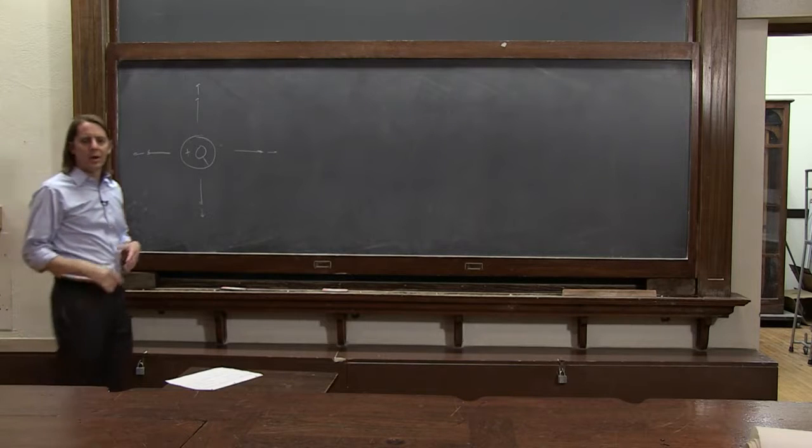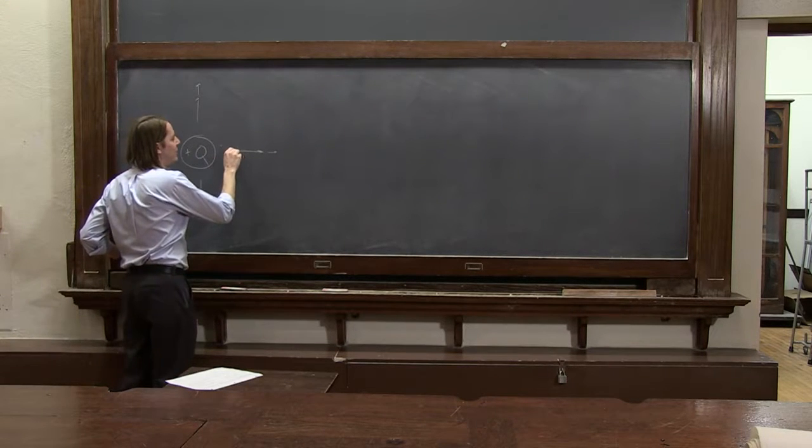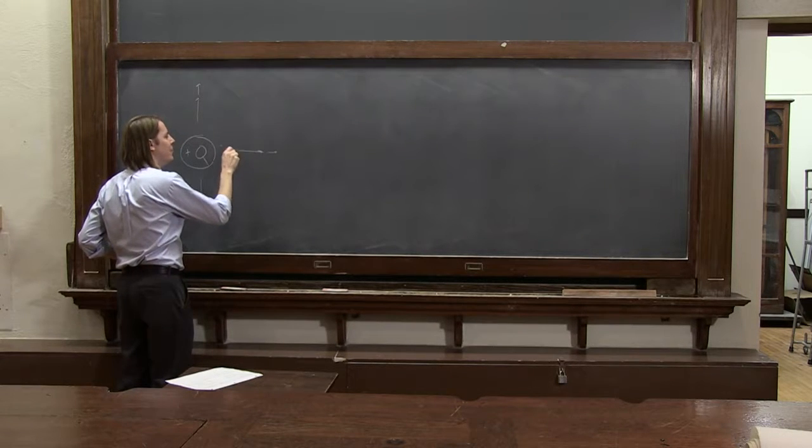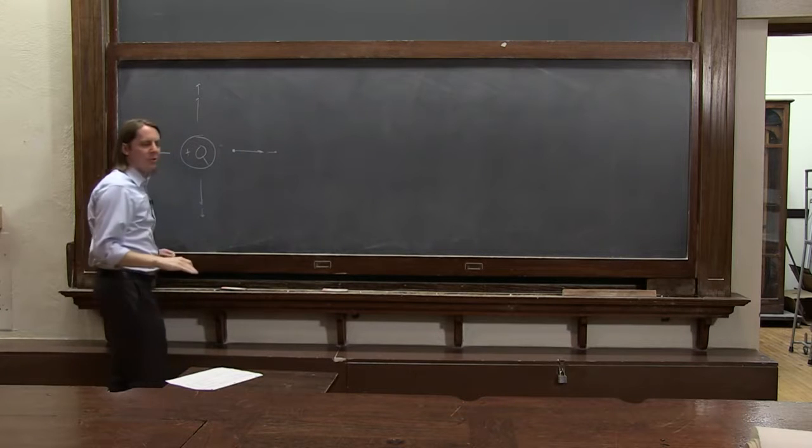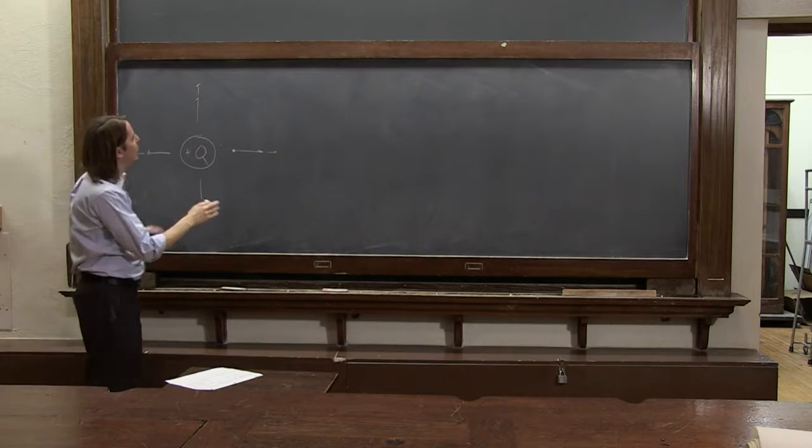And this worked pretty well, but it has a limitation. And that is that we're representing the strength of the electric field here with the length of this vector. So the magnitude information spreads out into other points of space. So if you draw it just right, it looks OK. But you can run into trouble.